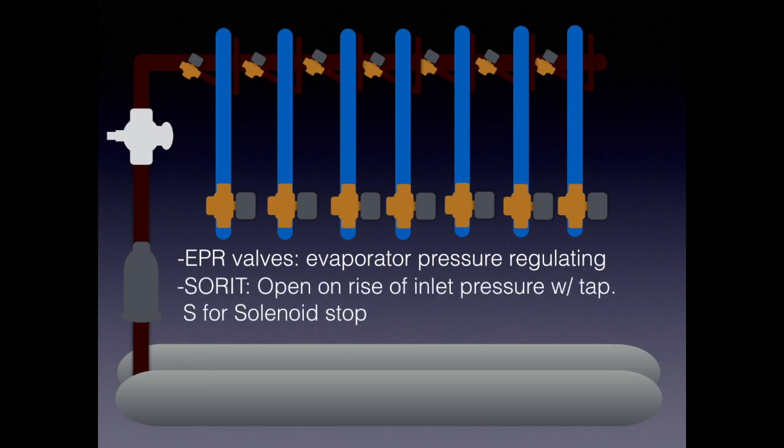These valves that control the EPRs are SORTS. In this case they have the solenoids. So SORTS is a solenoid controlled valve that opens on rise of inlet pressure and has a Schrader tap. So you have your SORTS and your OREs and really the only difference is the solenoid stuff.